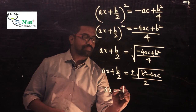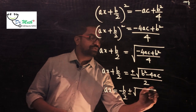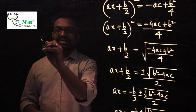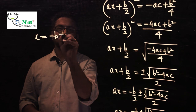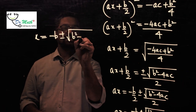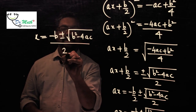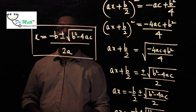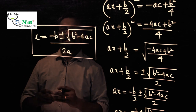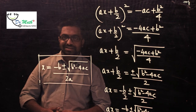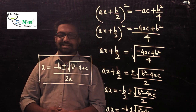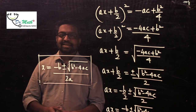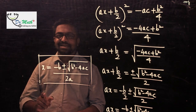Shifting b/2 to the right-hand side: ax = −b/2 ± √(b² − 4ac) / 2, which gives x = (−b ± √(b² − 4ac)) / 2a. This is how we derive the quadratic formula. I hope that was easy — thank you so much for watching. Don't forget to like, subscribe, and share!